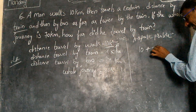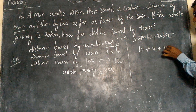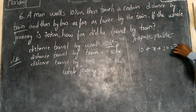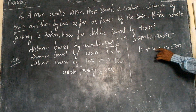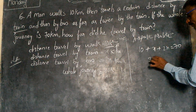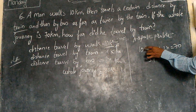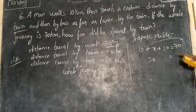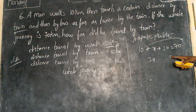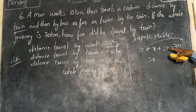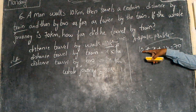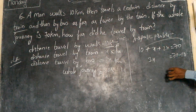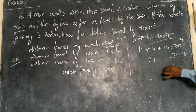10 plus x plus 2x equals 70 — that is the whole kilometers equation. So x plus 2x is 3x, and 3x plus 10 equals 70. Transposing 10 to the other side: 3x equals 70 minus 10, which equals 60.